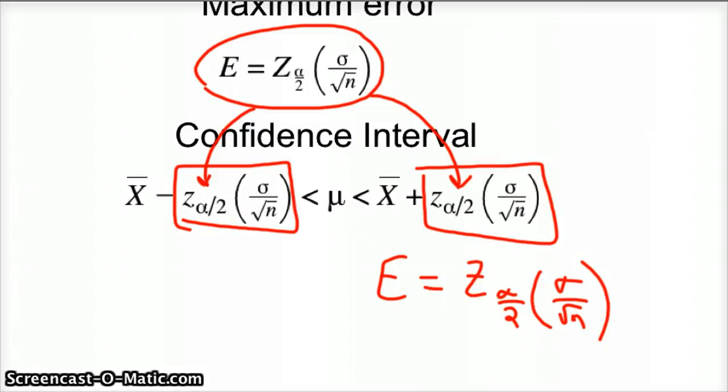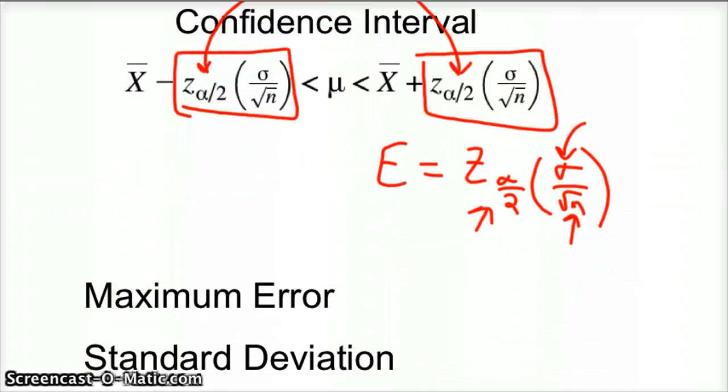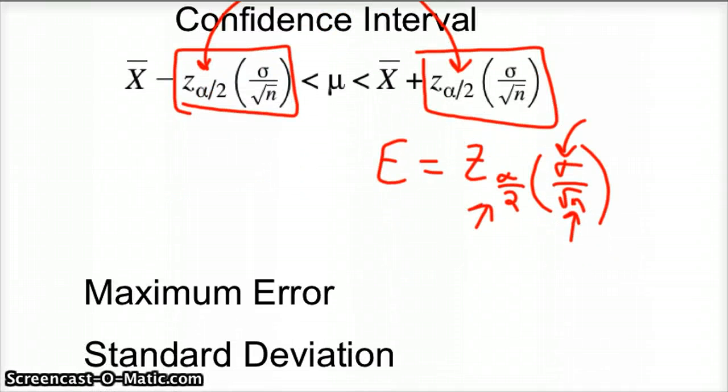This is your z-score or whatever tolerance you're looking at. This is your standard deviation and this is the amount in the sample. So we're really looking for the amount in the sample. We're looking for n. So the first thing I would probably do is I'm going to rewrite this.